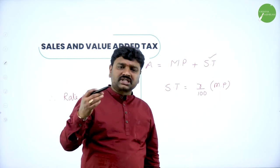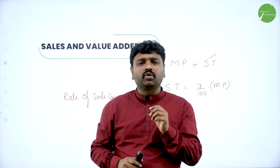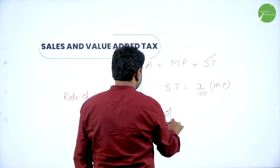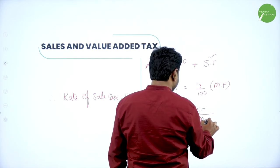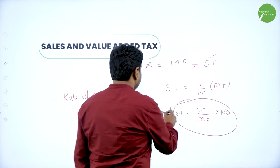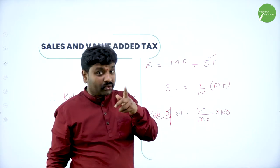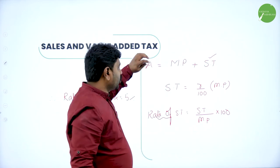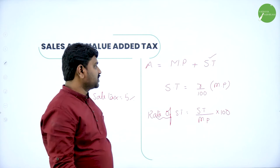We also have profit, loss, cost price, and selling price — whatever you studied in high school, we will continue. The basic formula: total amount paid is market price plus sale tax. Rate of sale tax is sale tax paid divided by market price into 100. Sale tax is compared only with market price because it is calculated on market price.